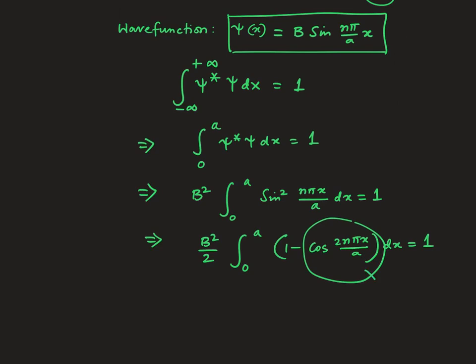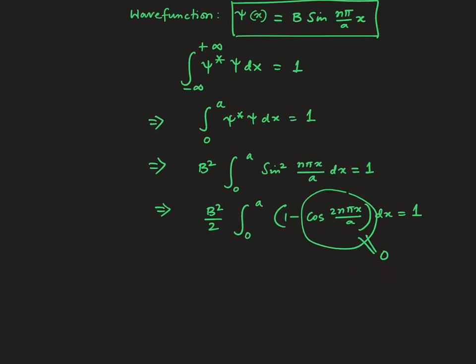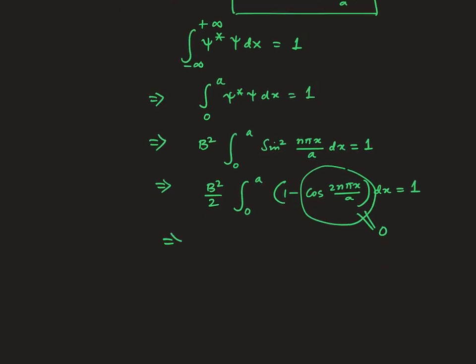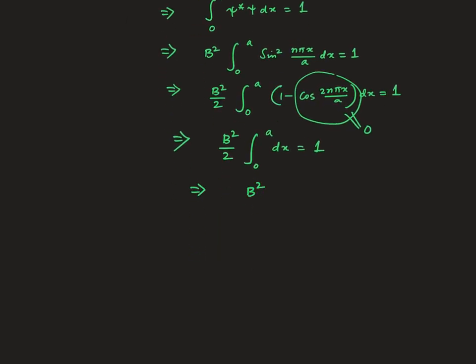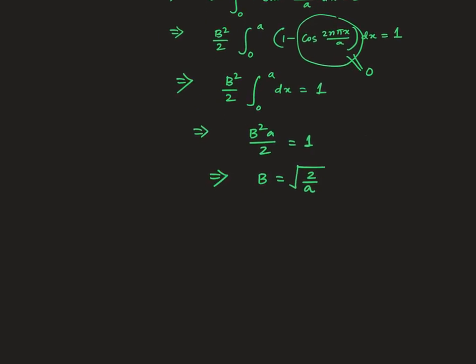So I will leave the job for you. Can you show this integral vanishes in this region? And you will be left with integral from 0 to a dx equals 1. That implies B² times a/2 equals 1. That implies B has to be square root of 2/a. So for one-dimensional box, you have the wave function as square root of 2/a times sin nπx/a.